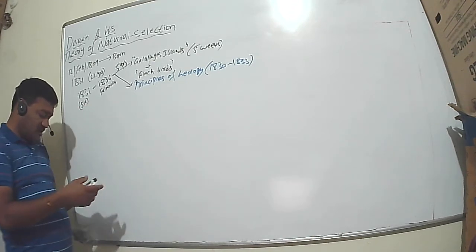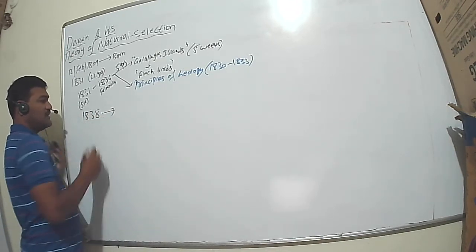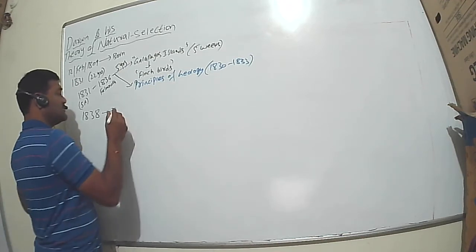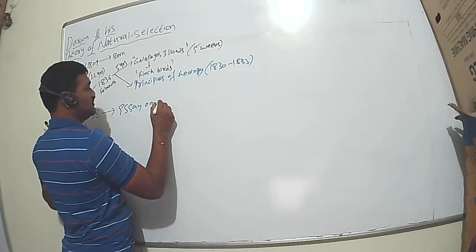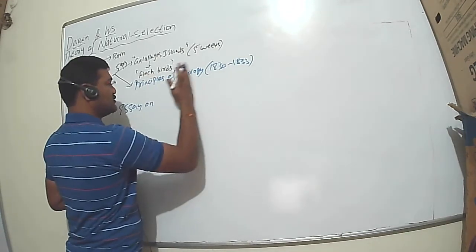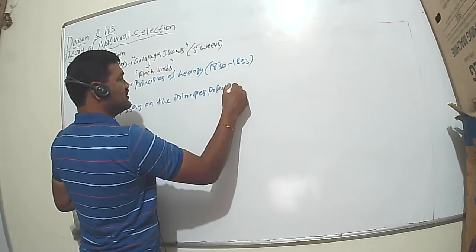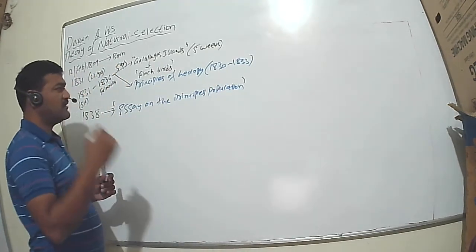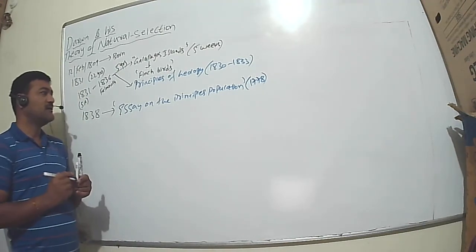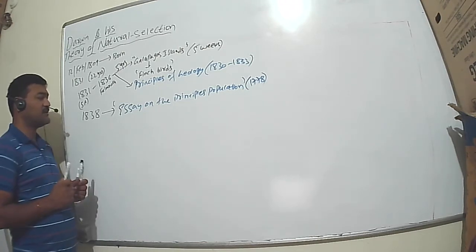In October 1836 he returned to Falmouth, England. After two years in 1838 he came across one research paper, a very old research paper called Essay on the Principles of Population. It was written by Robert Malthus in 1778. Robert Malthus was an English scholar and political economist. Darwin read that paper in 1838.